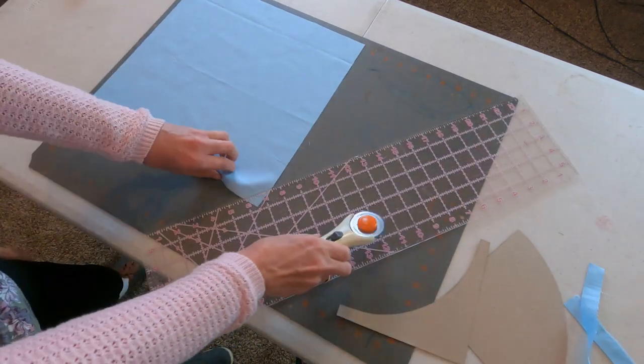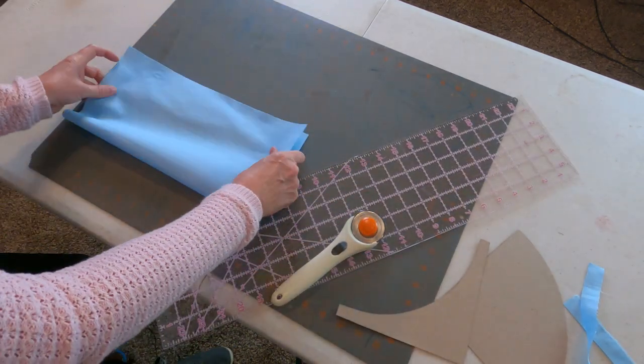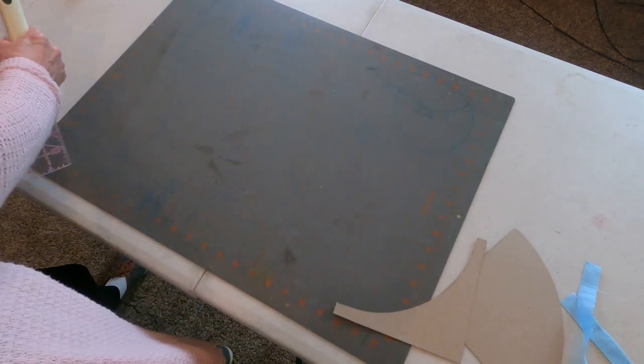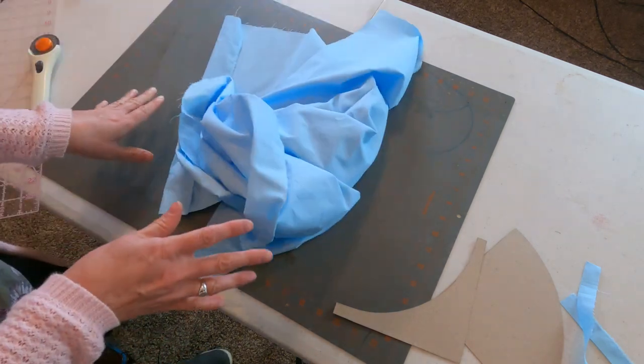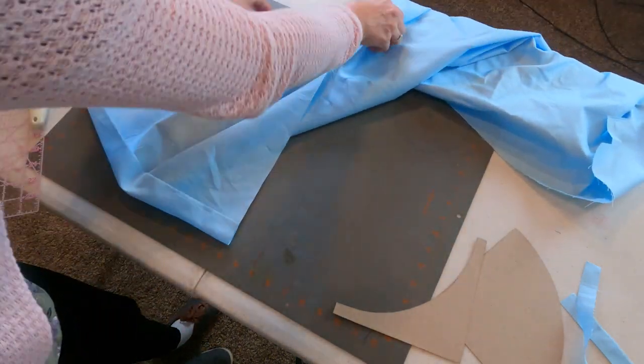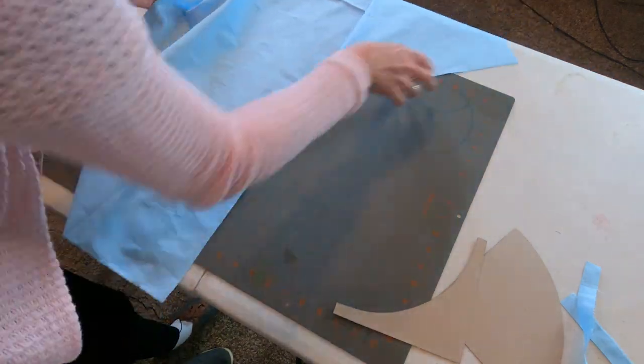And then we can cut off the other sides to give us that 13 and a quarter inch square. And then we're going to go ahead and we're going to set this square aside for another month. And now we're going to come back and we're going to work on our drunkard's path pieces.